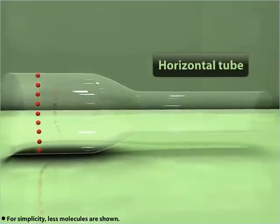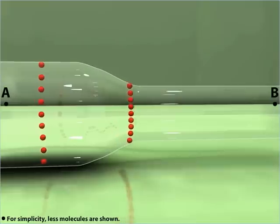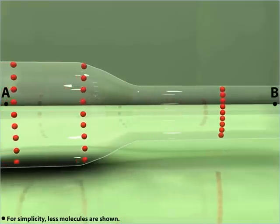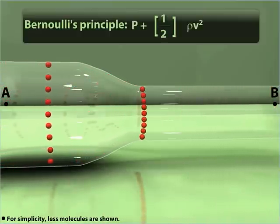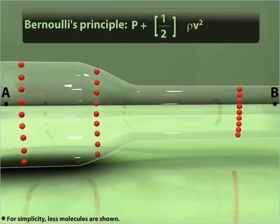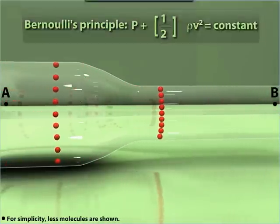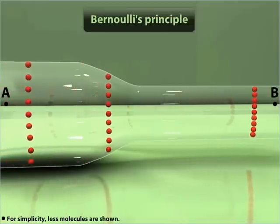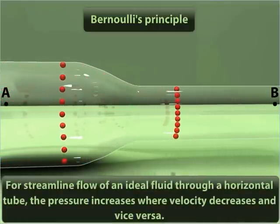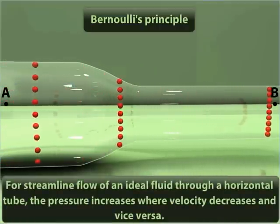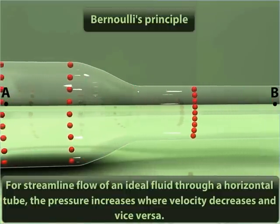For a liquid flowing through a horizontal tube, the sum of pressure and kinetic energy per unit volume at the two ends of the tube is equal to a constant. Therefore, Bernoulli's Principle also states that in the streamlined flow of an ideal fluid through a horizontal tube, the pressure increases where velocity decreases, and vice versa.